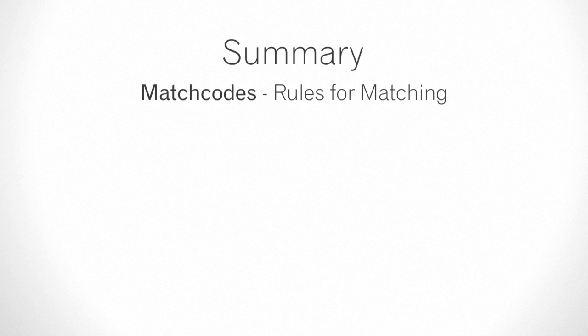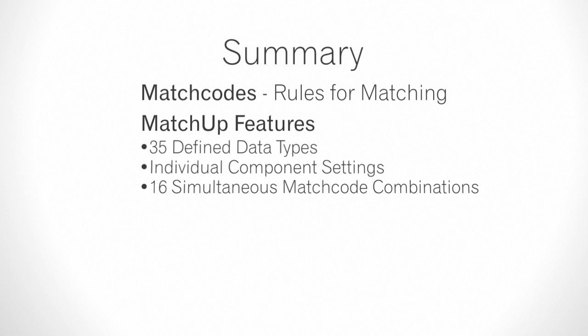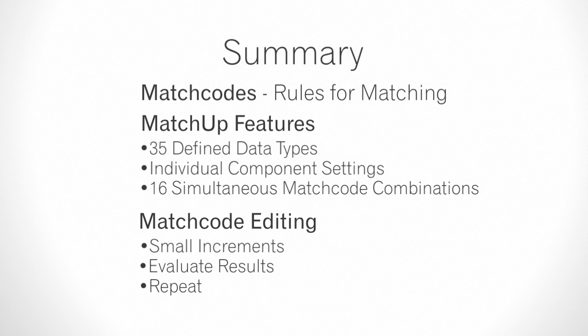In summary, the Match Code Editor lets you define the match code — the rules which determine whether the records will match or not. With 35 defined data types, individual component settings, and up to 16 simultaneous match code combinations, the match code gives you a lot of flexibility to match records. Please note: when editing match codes, make changes in small increments and evaluate the results, and repeat the process as necessary.